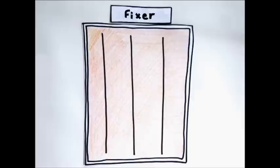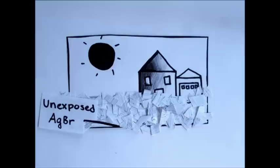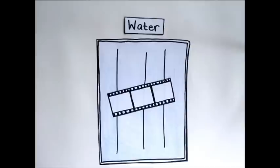The next tray contains the fixer. This solution removes the unexposed and unactivated bromide ions. This only removes silver halide crystals, leaving its converted form, silver metals, behind.